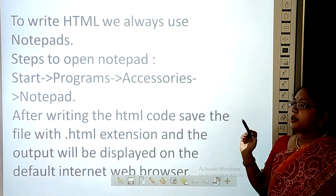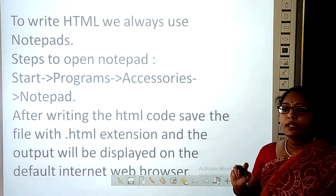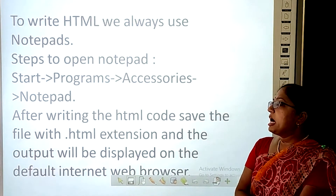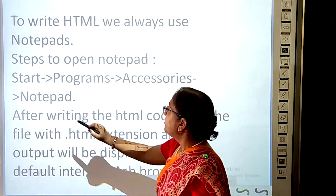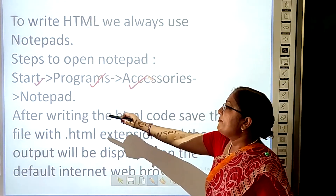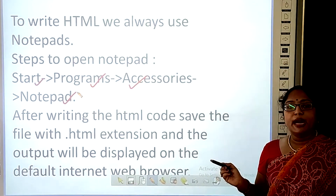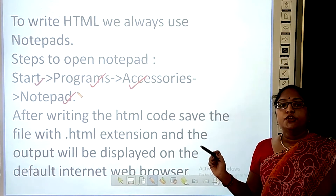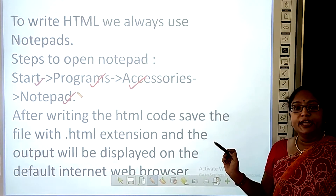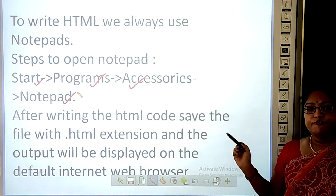To write HTML, we always need Notepad. First, write the code in Notepad. To open Notepad, go to the Start button, then go to Programs, then Accessories, and click on Notepad. If you want to open Notepad through your keyboard, press the shortcut key and Notepad will open. After writing your code, save the file and you will see the output in your default web browser.